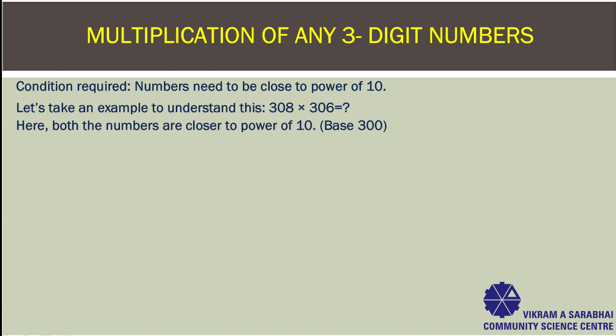Let's take an example to understand this. What will you get when you multiply 308 with 306? Here both the numbers are closer to a power of 10. The base is 300.